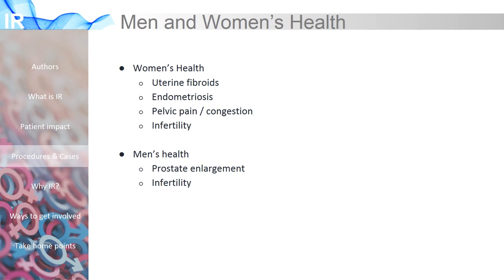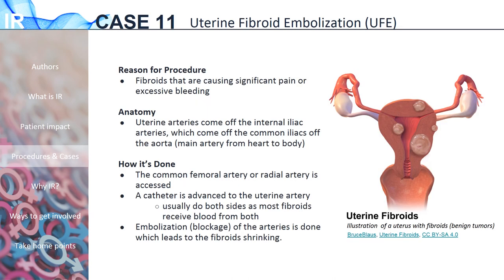Interventional radiology is also very active in medicine specific to men's and women's health. For example, IRs can help treat fibroids, endometriosis, pelvic pain, and infertility in women. For men, IRs can also help treat infertility in addition to prostate enlargement. One procedure offered by IR is uterine fibroid embolization, also known as UFE. This procedure can be offered to women with symptomatic fibroids, which are abnormal growths of the muscle of the uterus. Women with significant pain or bleeding from their fibroids may choose to undergo a UFE as a minimally invasive procedure to treat their symptoms. The procedure is done by accessing an artery supplying the uterus, then injecting small particles to block off or embolize the uterine artery. Women may go home the same day or be kept overnight for pain control as the fibroids die off.